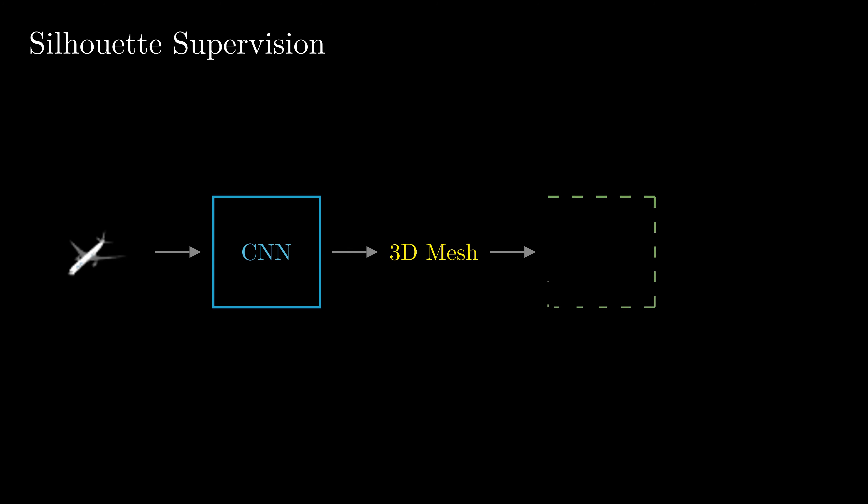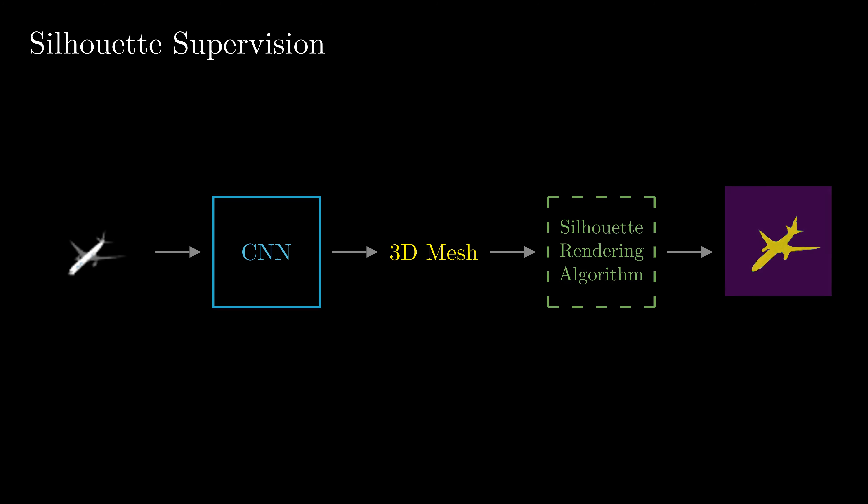Usually, the architecture is that an input image is fed into a neural network, which predicts a 3D mesh, and then a differentiable renderer renders the silhouette of the mesh. The silhouette can then be compared to the supervised ground truth silhouette, which allows training the CNN.